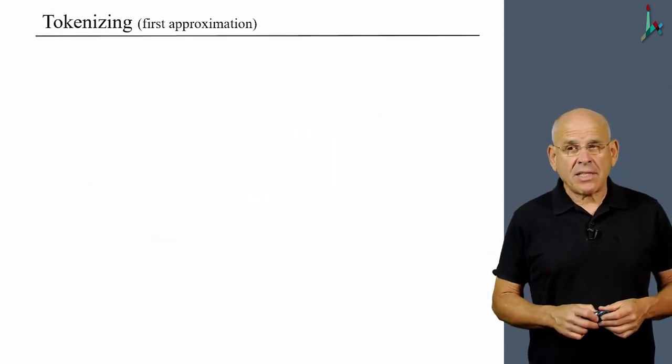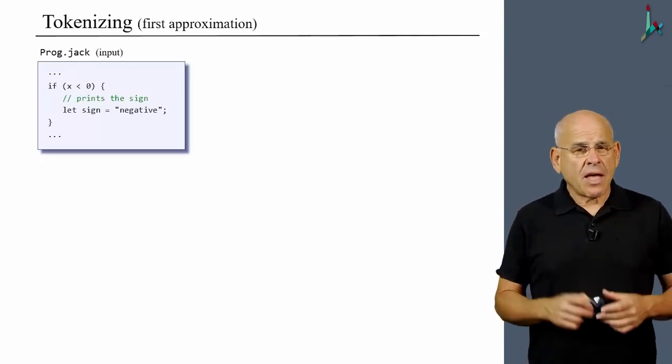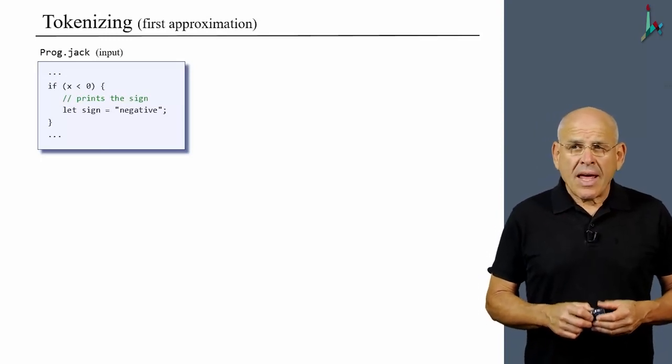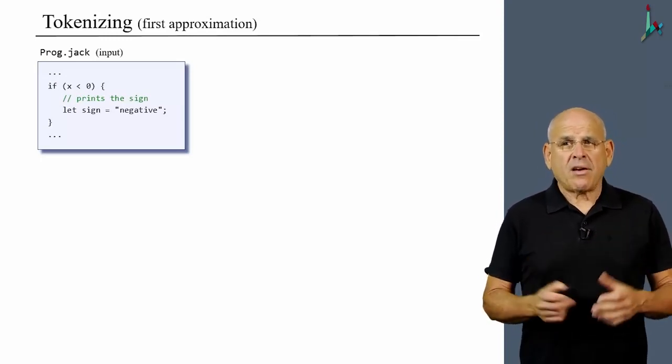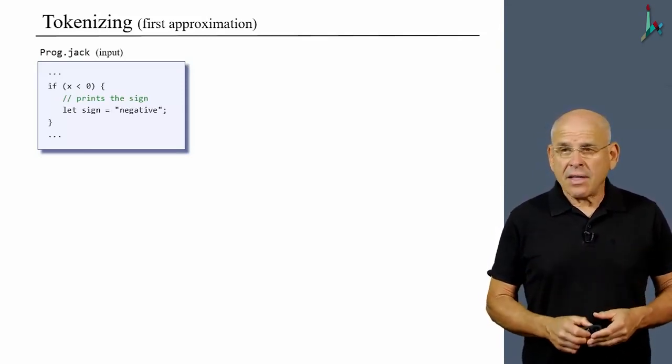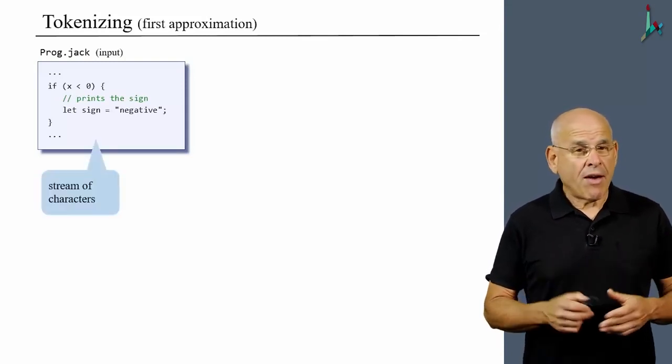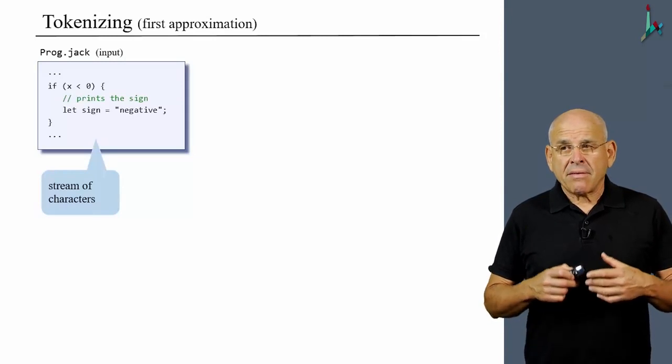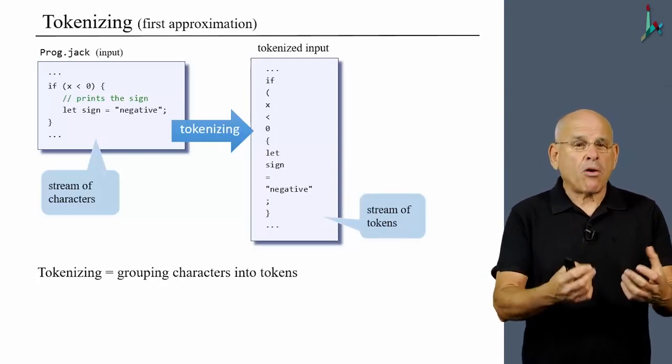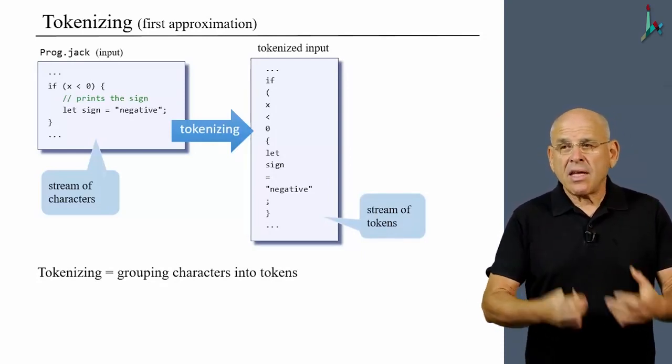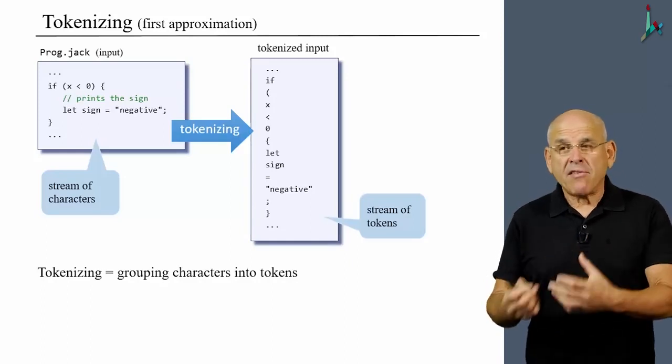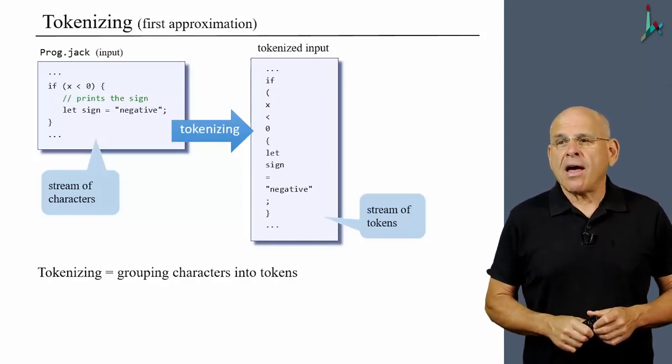Here's an example of tokenizing in action. Suppose that we have this input file which presumably contains a Jack program. The first thing I'd like you to observe is that as far as lexical analysis is concerned, this input file is nothing more than a stream of characters. When we say tokenizing, we refer to the act of transforming this bare-bone, primitive stream of characters into a stream of meaningful tokens, meaningful within the language that we are analyzing.